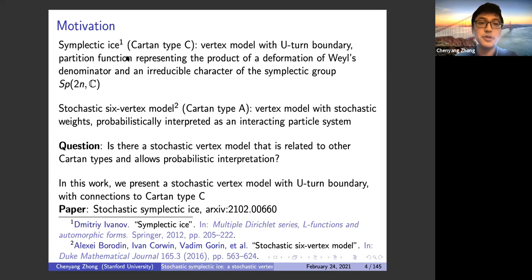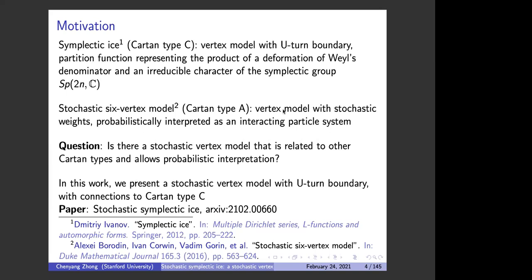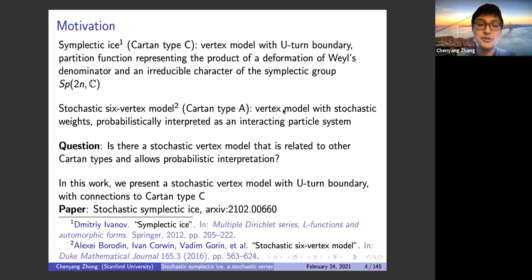Another source of motivation comes from the subject of integrable probability. For example, there is the stochastic six-vertex model, which is related to Cartan type A — summations over the symmetric group — obtained with stochastic weights. The benefit of stochastic weights is that these lattice models can be given a probability interpretation as interacting particle systems. We can then define height functions and study probability questions like fluctuations and laws of large numbers.